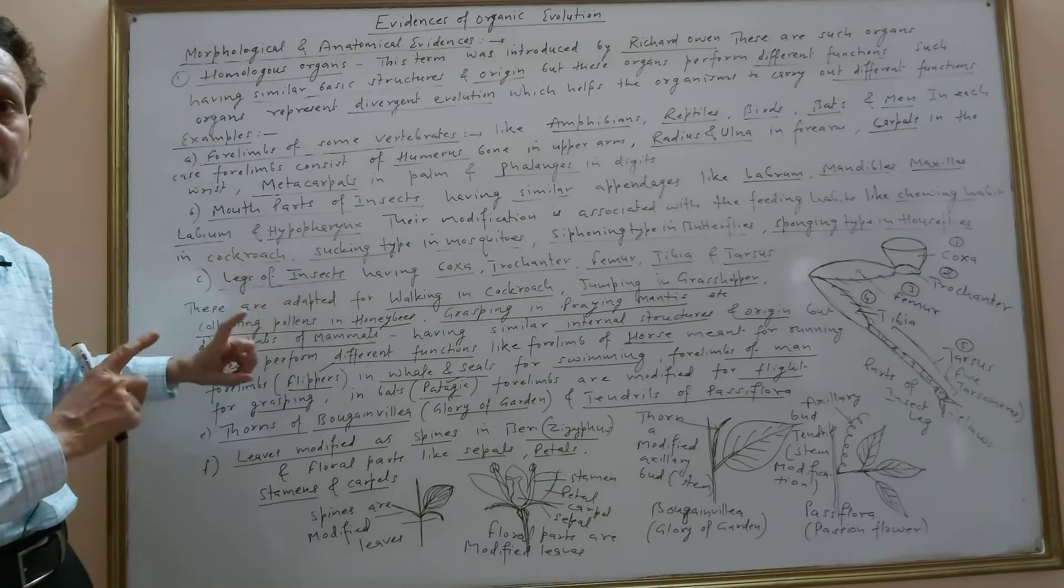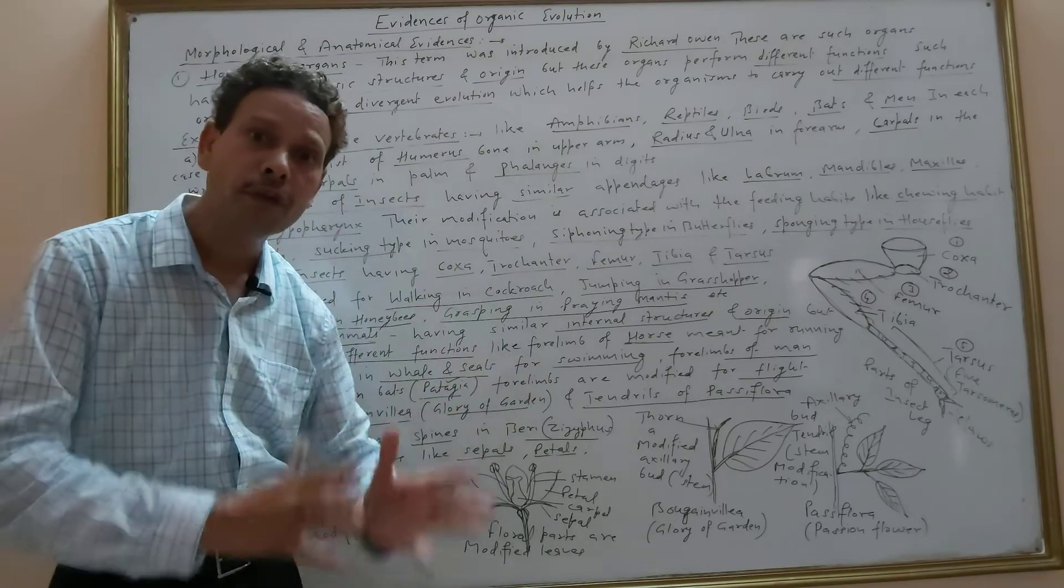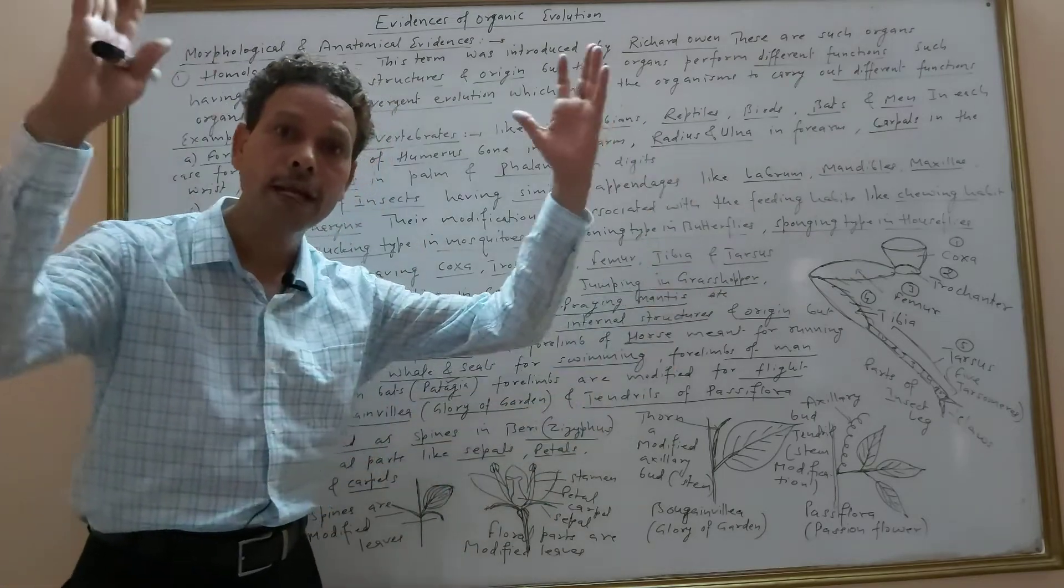The flippers of whale and seal are for swimming, and in case of bats, the patagium, which are modifications of forelimbs, are for flight purpose.